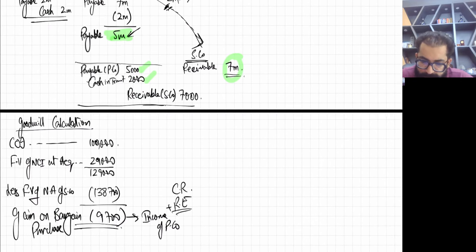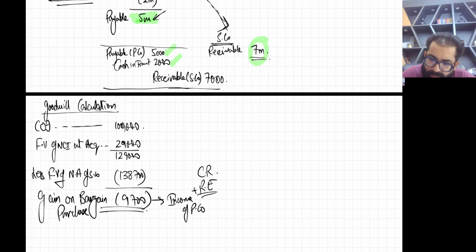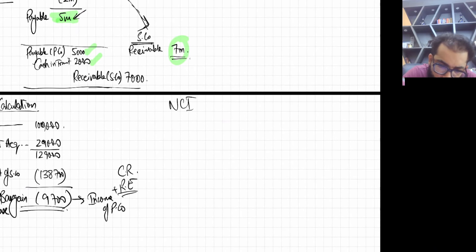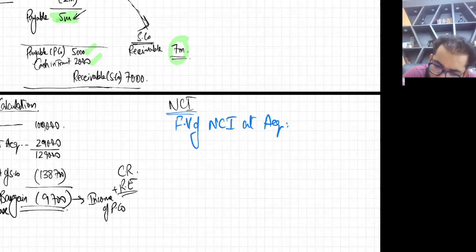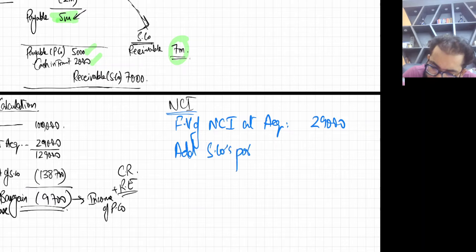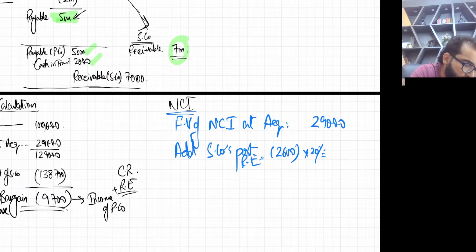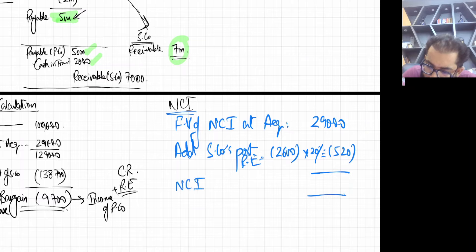NCI calculation: Fair value of NCI at acquisition = 29,000. Add S company's post retained earnings × NCI percentage: (−2,600) × 20% = −520. Final NCI for the consolidated SOFP = 29,000 − 520 = 28,480.